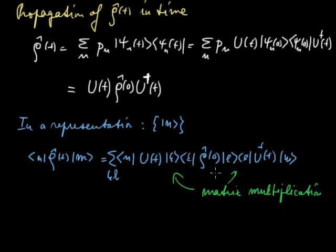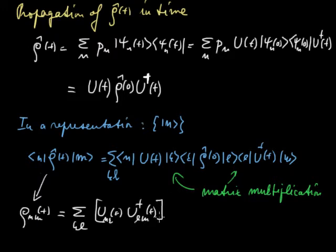Now we can also reorganize this matrix multiplication in a somewhat different form. So we can say that our rho n m t, which is this, can be written as sum over k l, that's this sum. And now I take these elements and these elements together. So there will be U n k of t and U dagger l m of t, and they will form one entity here. And behind that there will be rho k l at t equal zero.